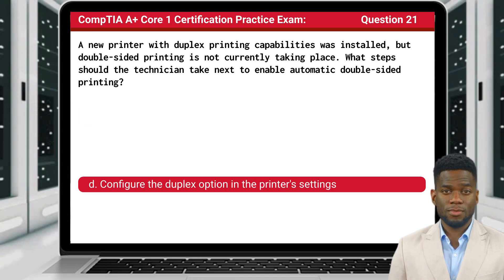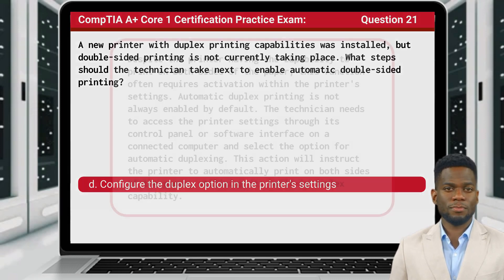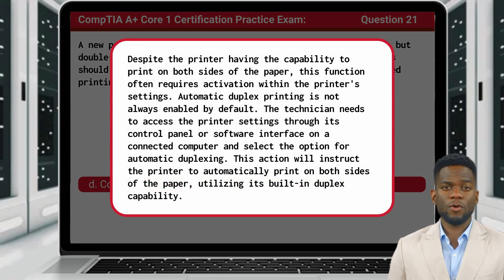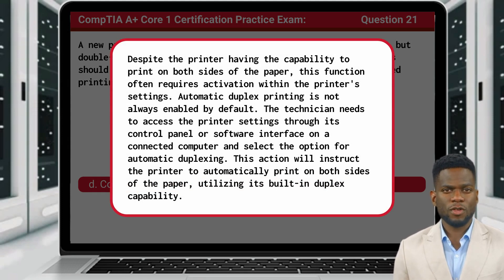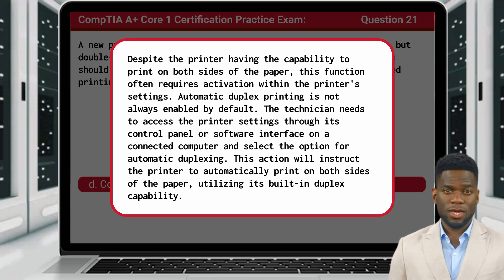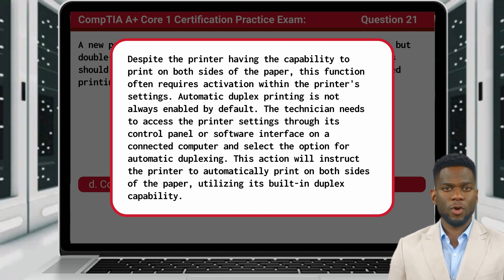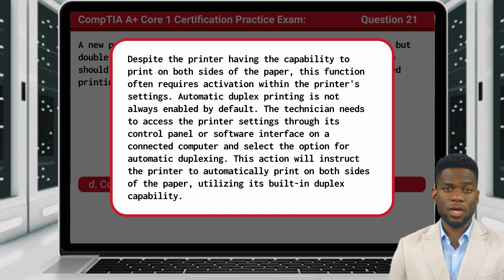The answer is D: configure the duplex option in the printer's settings. Despite the printer having the capability to print on both sides of the paper, this function often requires activation within the printer's settings. Automatic duplex printing is not always enabled by default. The technician needs to access the printer's settings through its control panel or software interface on a connected computer and select the option for automatic duplexing. This action will instruct the printer to automatically print on both sides of the paper, utilizing its built-in duplex capability.